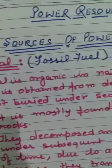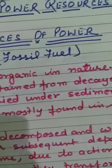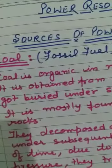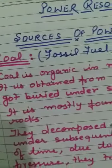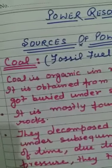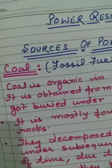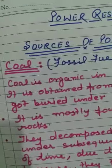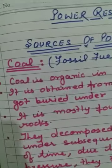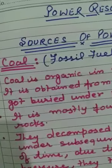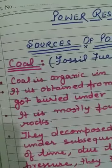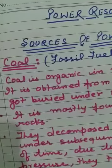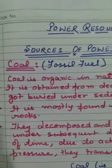We will take the first source of power: coal. Coal is also known as fossil fuel — and not only coal, but coal, petroleum and natural gas all belong to this group. We can say they are mineral fuels or fossil fuels. They have formed over millions of years from dead and decayed plants and animals.